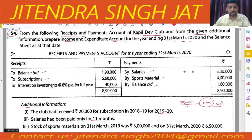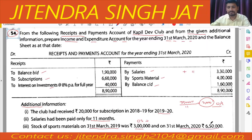The stock of sports material on 31st March 2019 was 3 lakh — this is the opening stock. When we calculate sports material consumed, opening stock will be added and closing stock will be subtracted.